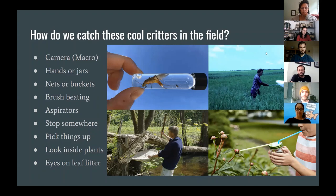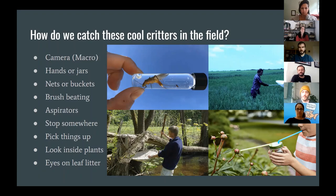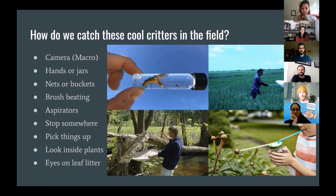A pretty simple technique almost anyone can access is sampling with nets or buckets. Nets are great — you can grab something flying, or as demonstrated here, sweep through grass or bushes and see what comes out at the end. A bucket works well at the river's edge: dig it down into the sediment, rinse some water through it, and you'll end up with whatever larvae or small insects were crawling around in there. Bush beating or brush beating requires a big piece of white canvas held underneath and something to hit bushes with — insects will fall right out onto it, and you can scoop them into jars or photograph them.